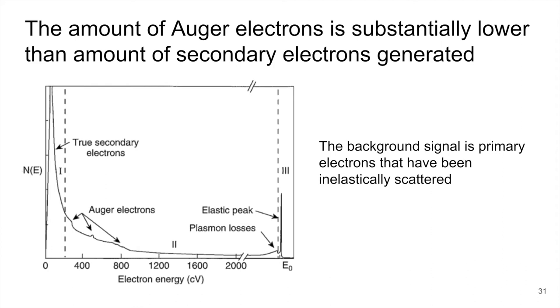So one thing I should say here, when we talk about Auger electrons, is that the amount that we have is substantially lower than the number of secondary electrons that's generated. Again, those secondary electrons are ones that are emitted from the incident. So here's just kind of a plot showing you this huge peak here is secondary electrons. And then just these tiny little blips are Auger electrons. So we have really low amounts. And so the background, the noise of the signal tends to be really large. And the background is actually the primary electrons that have been inelastically scattered along the way.